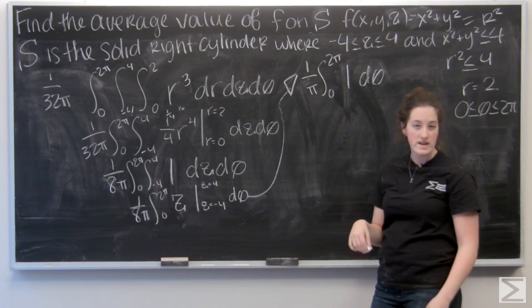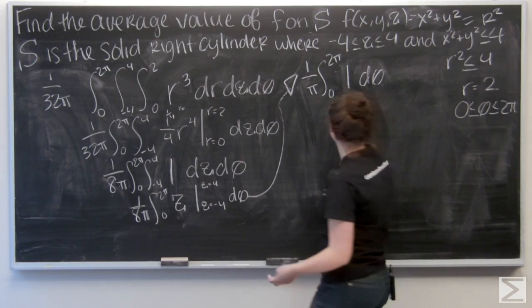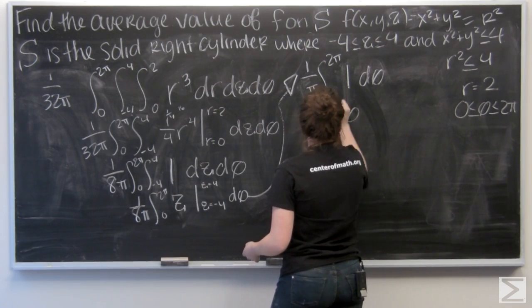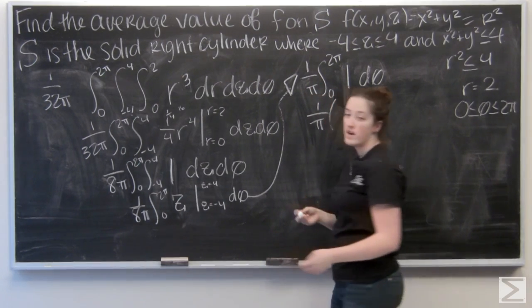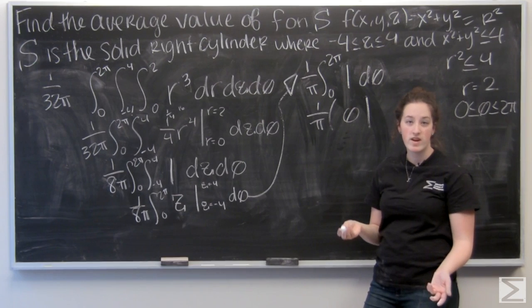Well, the integral of 1 d theta is just going to be theta. And I want to evaluate that from theta equals 0 to theta equals 2 pi.